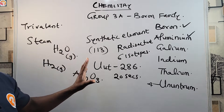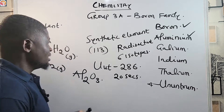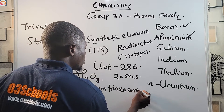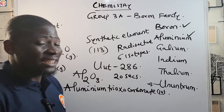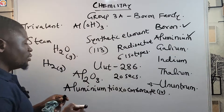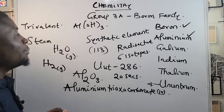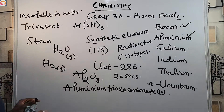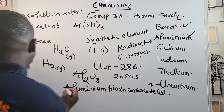Aluminium tricarbonate does not exist — there's no such compound as aluminium tricarbonate, so don't be confused if an examiner adds it as an option. Aluminium forms an oxide, Al₂O₃, and a hydroxide, Al(OH)₃. Both aluminium oxide and aluminium hydroxide are insoluble in water.